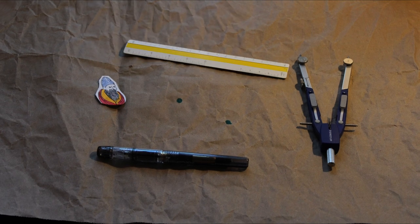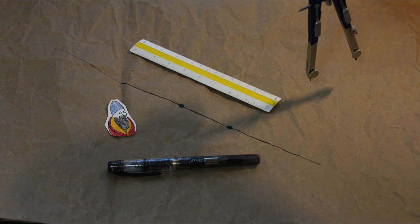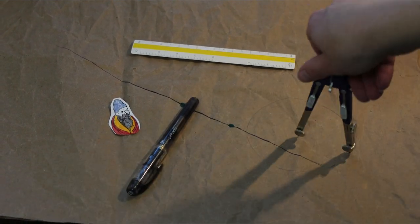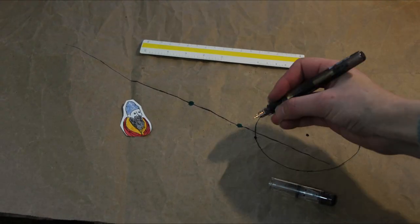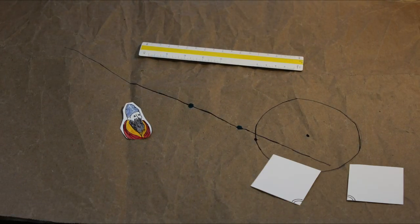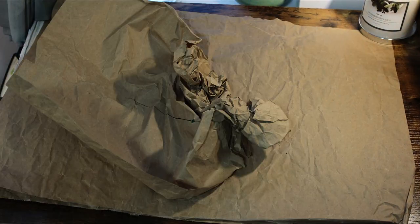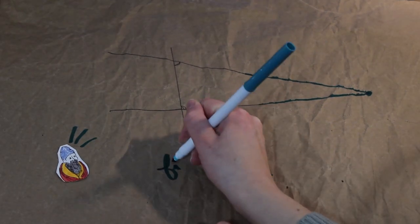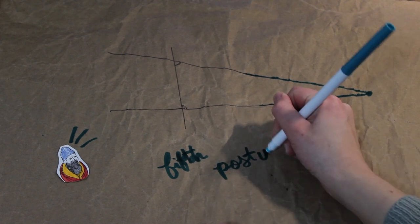Between any two points, you can always draw a straight line. Any line segment can be extended to an arbitrarily long line. Every circle with a given center and radius length can be drawn with the compass. All right angles measure the same. And if a line intersects two other lines and the internal angles on the same side add up to less than 180 degrees, then the two lines must intersect.